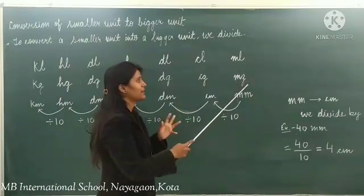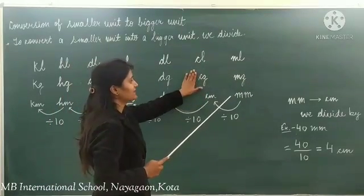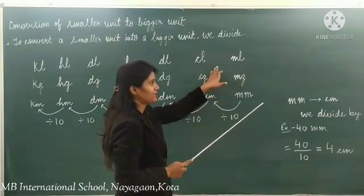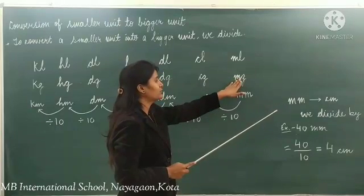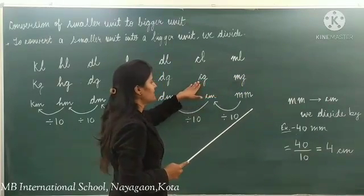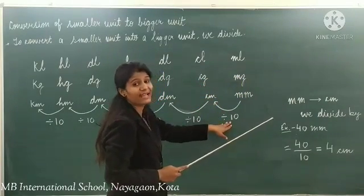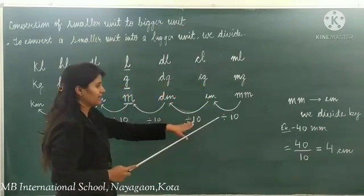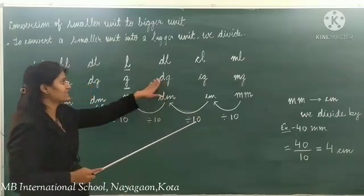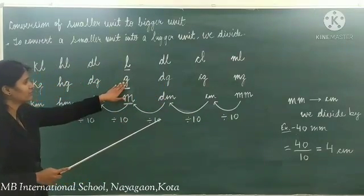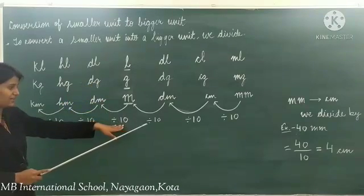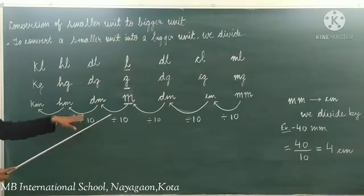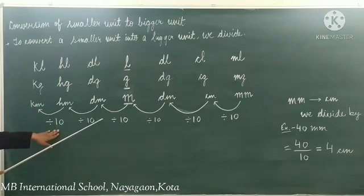If you have to convert milligram to centigram: when we had centigram to milligram, we multiplied. But now to convert milligram into centigram, we divide by 10. To convert centigram into decigram, divide by 10. Decigram into gram, divide by 10. Gram into decagram, divide by 10. Decagram into hectagram, divide by 10. And hectagram into kilogram, divide by 10.